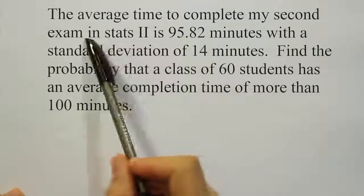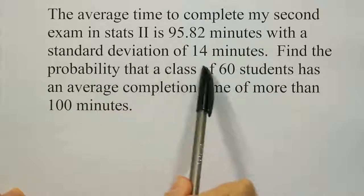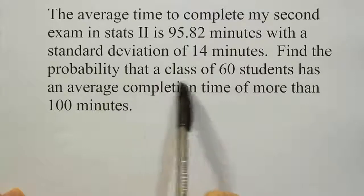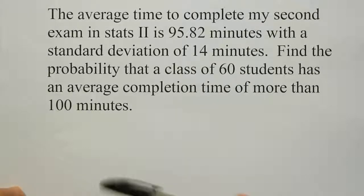The average time to complete my second exam in STATS 2 is 95.82 minutes with a standard deviation of 14 minutes. Find the probability that a class of 60 students has an average completion time of more than 100 minutes.